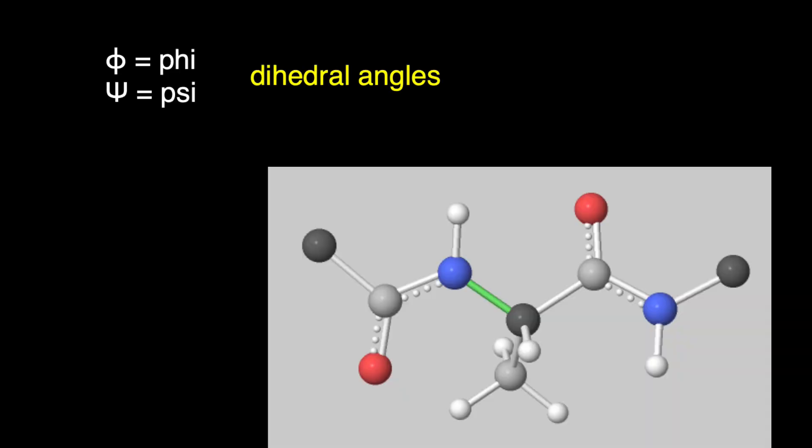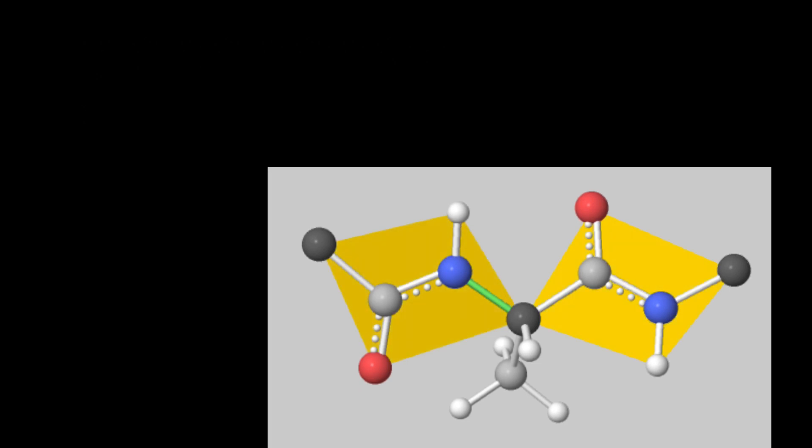Φ and ψ are examples of dihedral angles, which are, by definition, the angle between two intersecting planes, shown in yellow in this image. Notice that the carbonyl and the adjacent nitrogen are shown with dotted bonds. Remember that peptide bonds, and amide linkages in general, have significant contribution from a resonance structure with double bond character. So much so that the nitrogen and carbonyl group are coplanar.